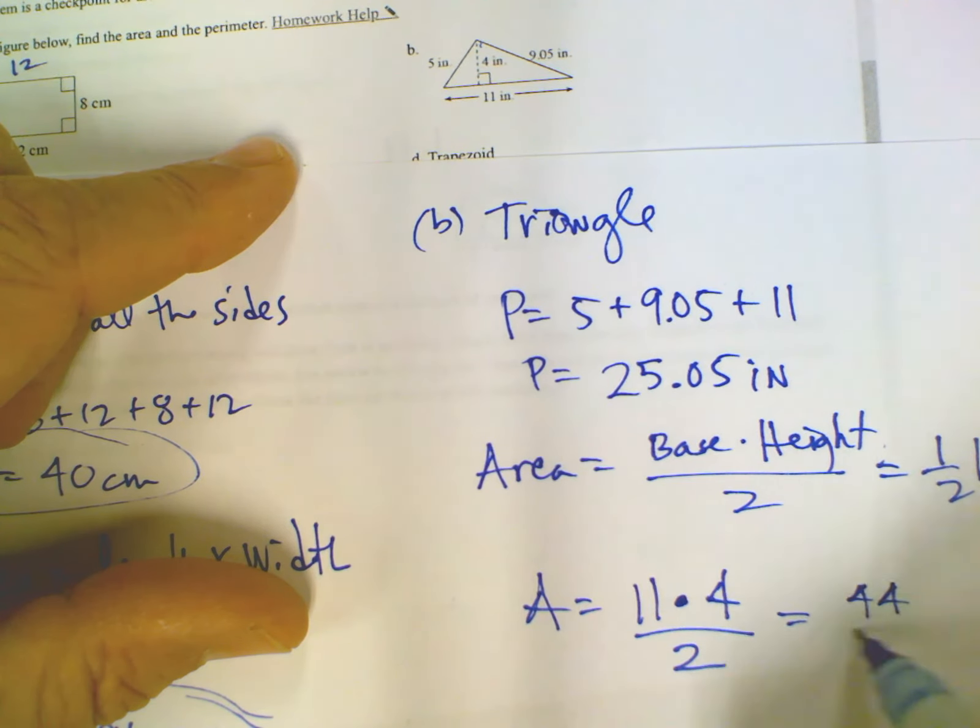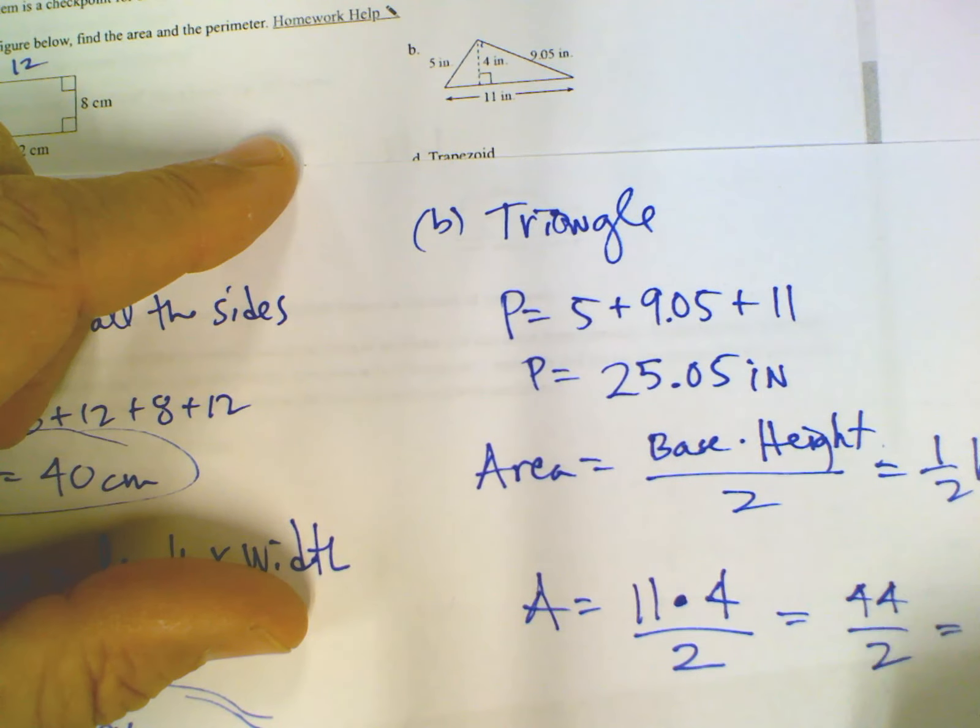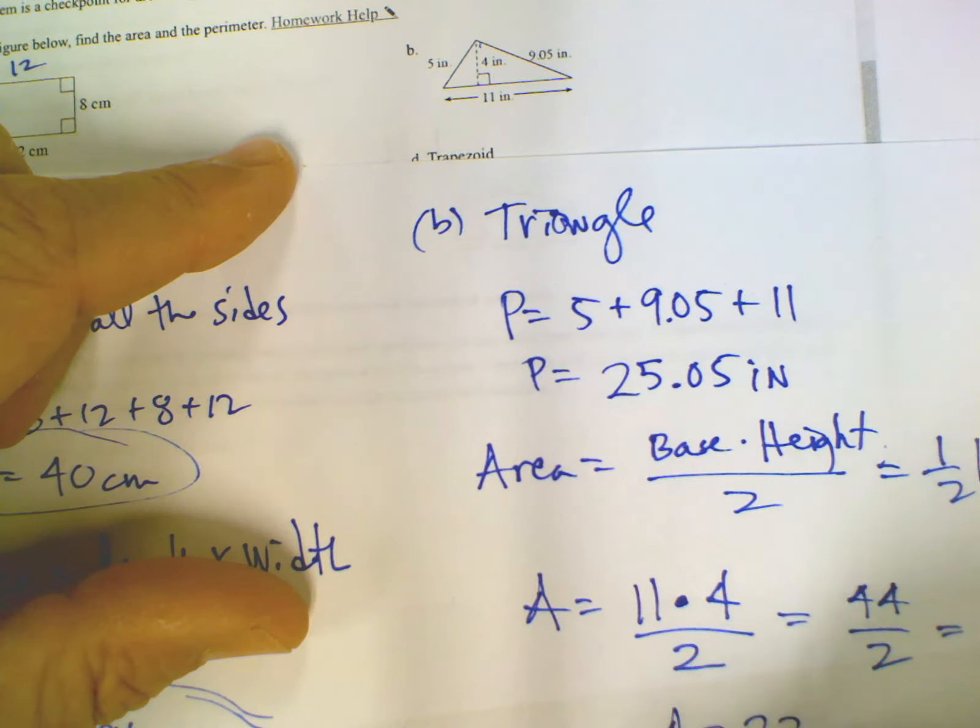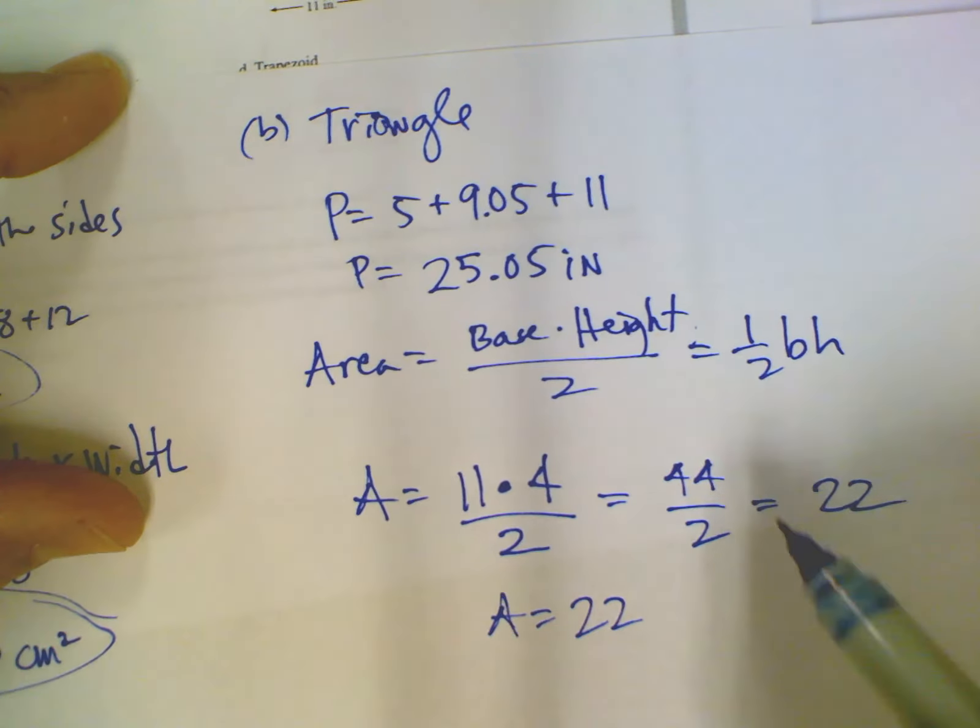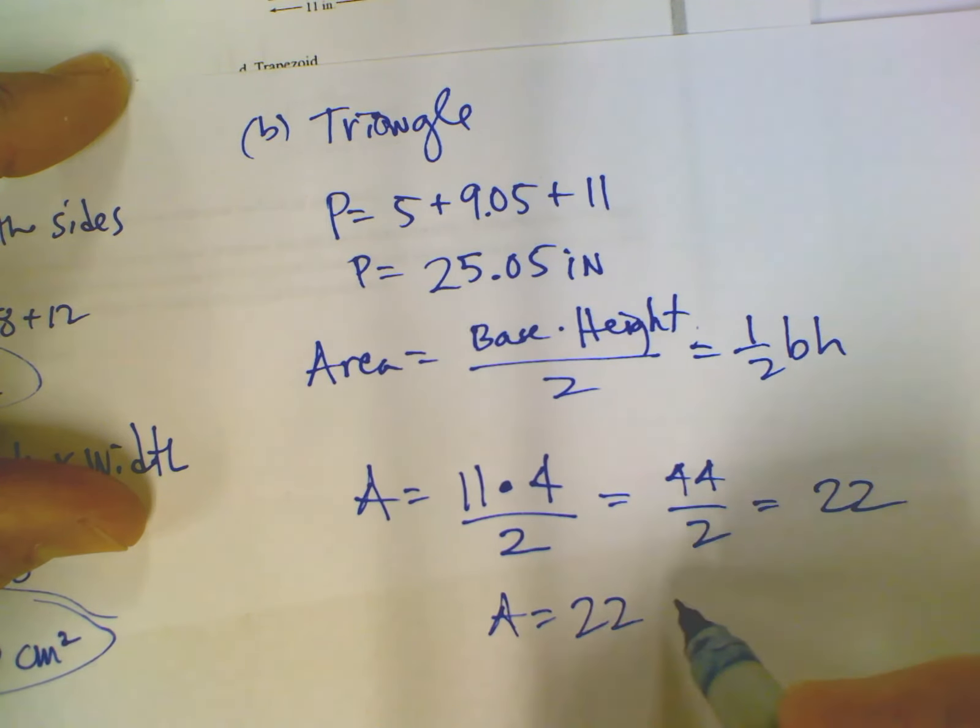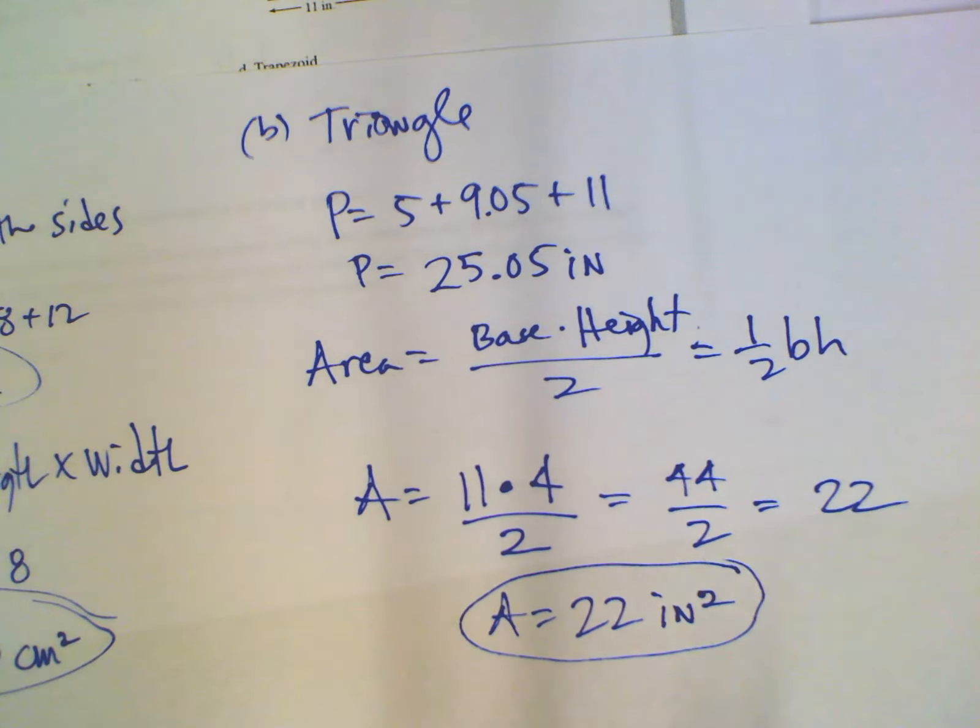So that gives me 44 over 2, which is 22. So my area is 22, and again, squared units. So inches squared for the area for this problem. So there's my area.